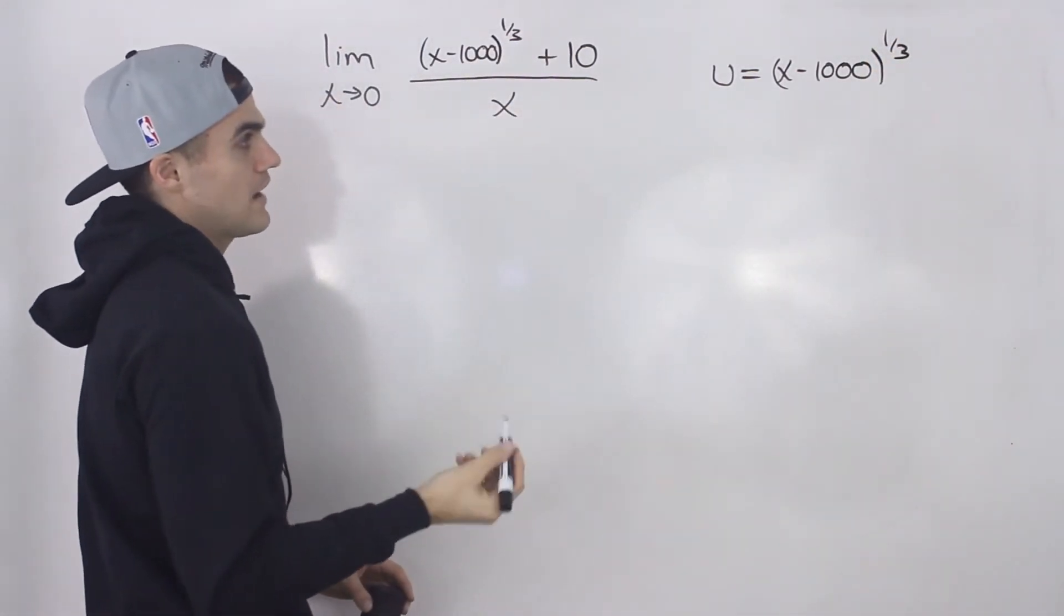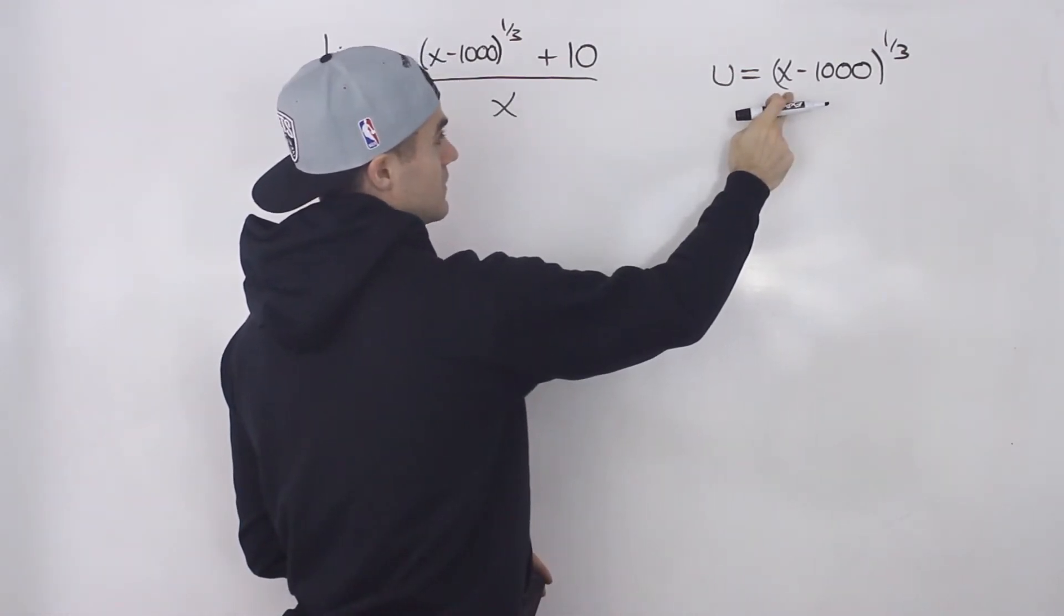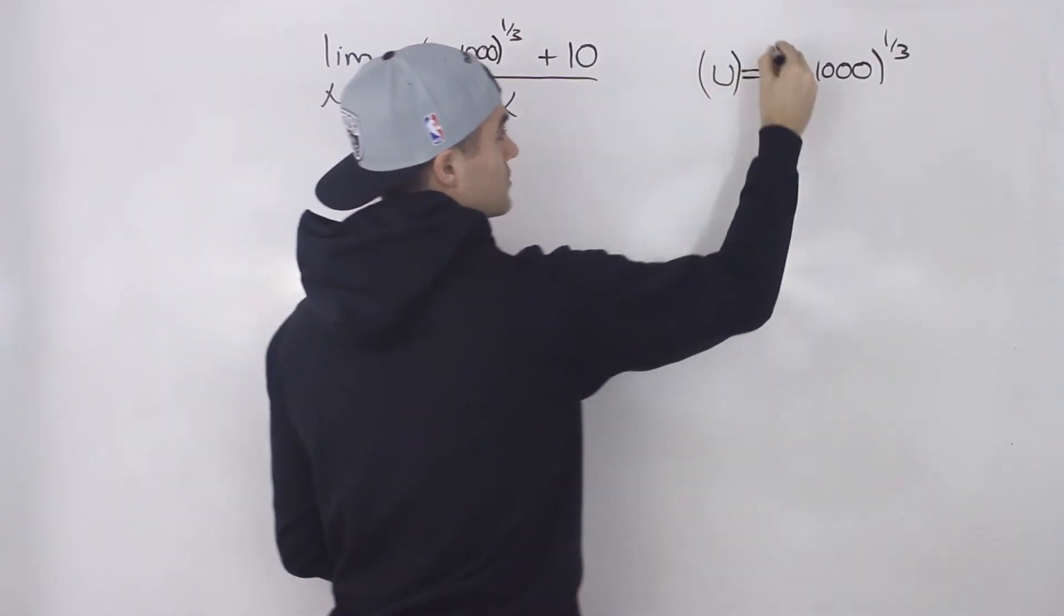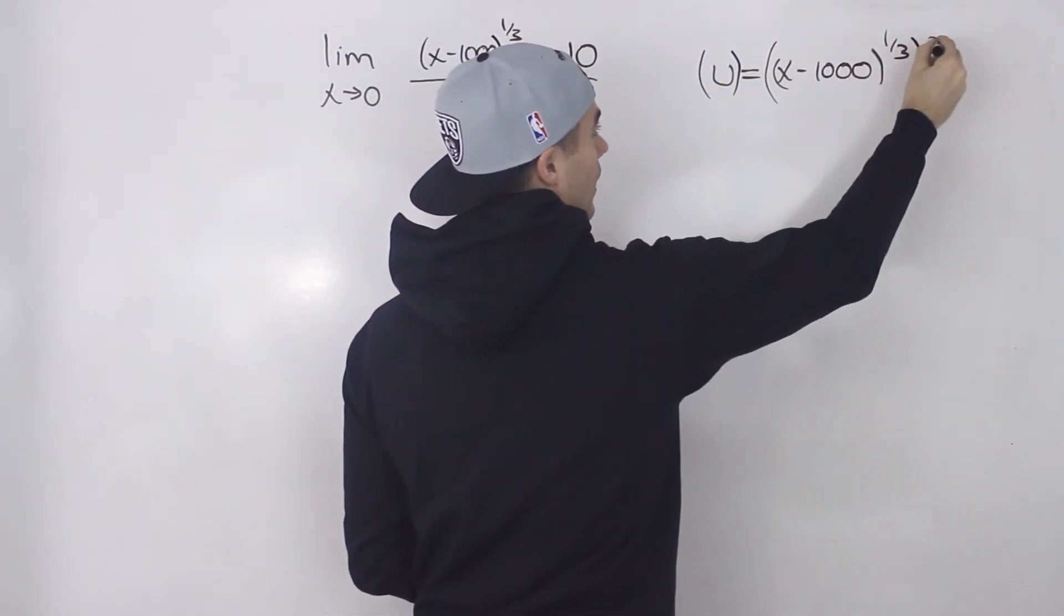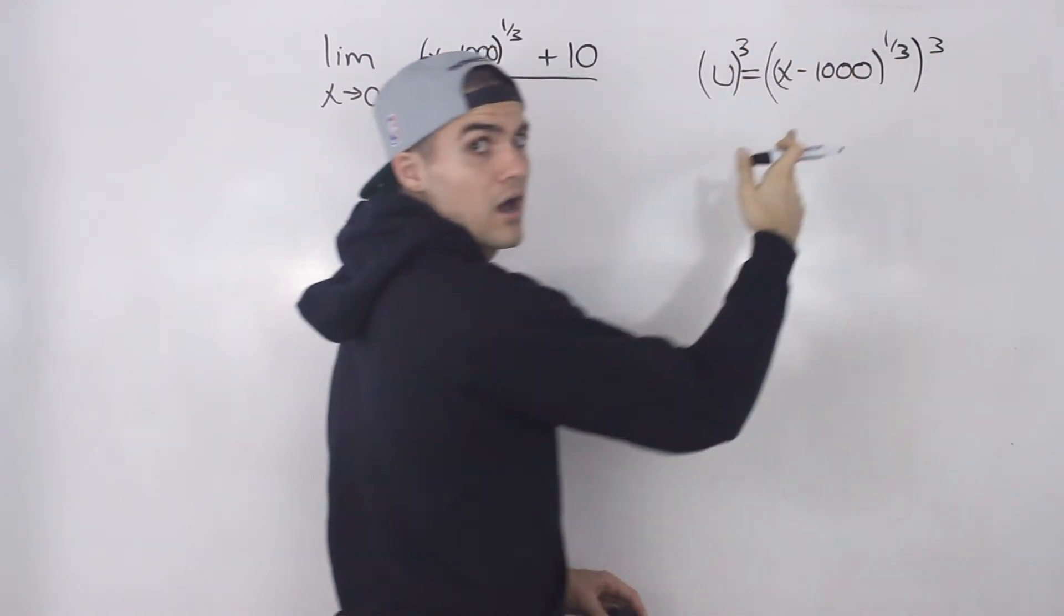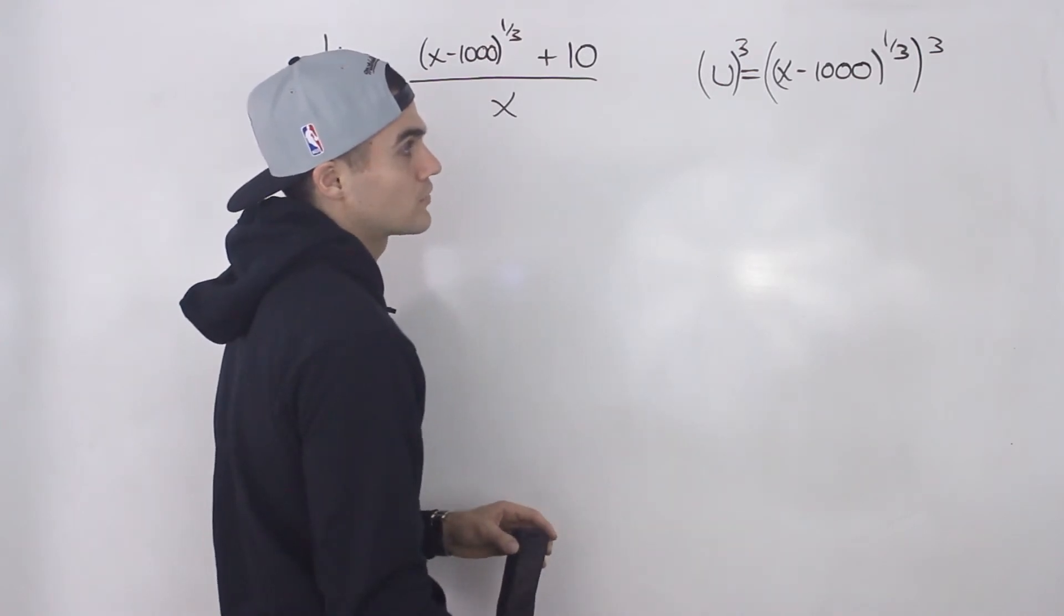Now we have to isolate for this x here. So what we do is take both sides to the power of 3, basically the reciprocal of that exponent—1 over 3 reciprocal is 3 over 1, or just 3.